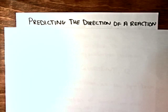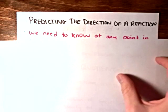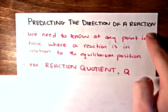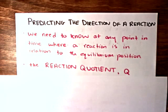We do this by using something called a reaction quotient. Because at any point in time for a chemical reaction, we want to know whether that reaction is at equilibrium, whether it's approaching equilibrium, or whether it's already past equilibrium.